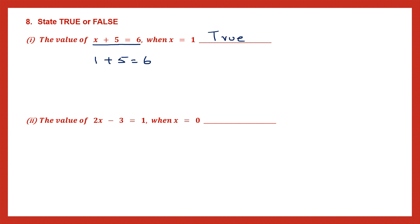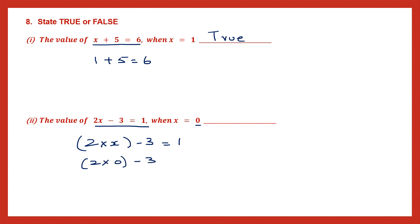Let's take the second statement. They're saying the expression 2x minus 3 will equal 1 when x is 0. So let's try that. 2x means 2 into x, minus 3, and it should equal 1. So 2 into 0, minus 3, equals 1? 2 zeros are 0. 0 minus 3 is minus 3, and we know that is not equal to 1. So this statement is false.